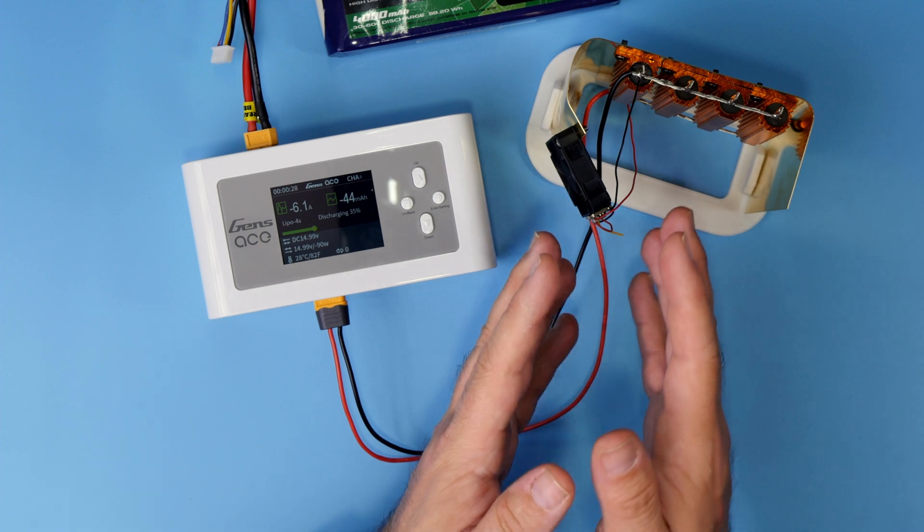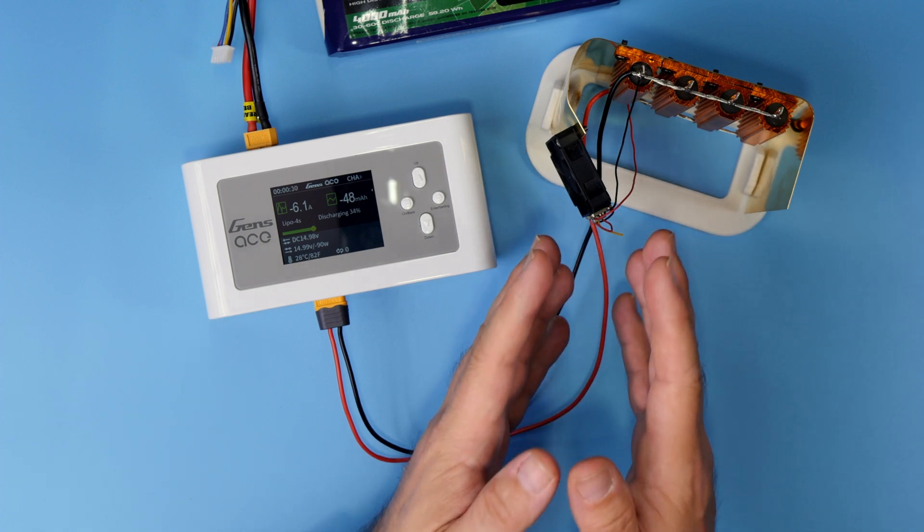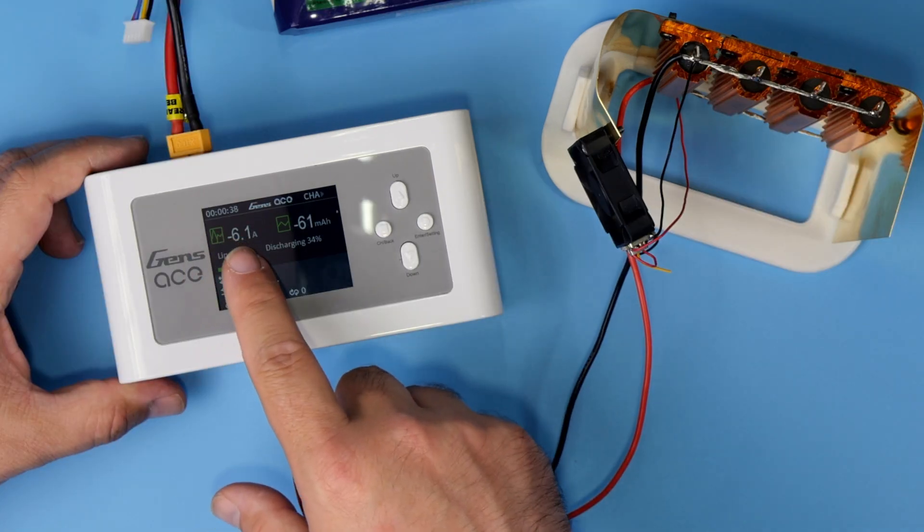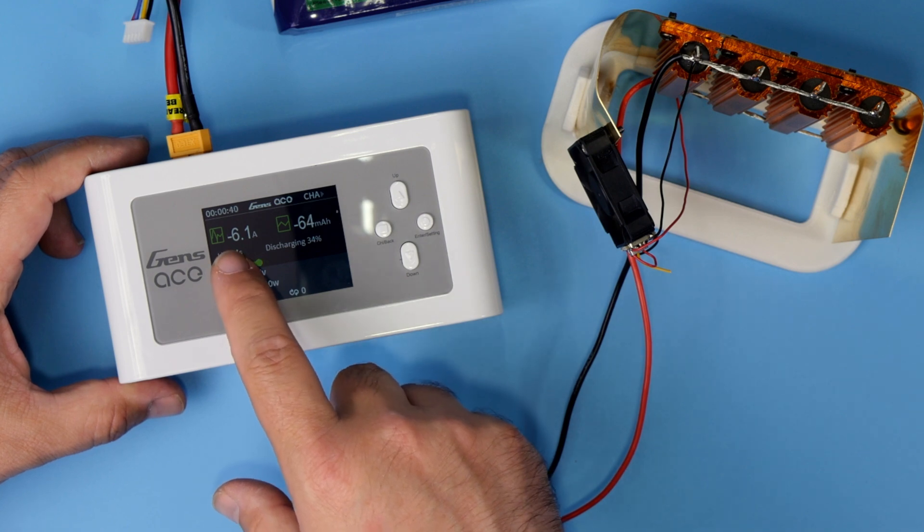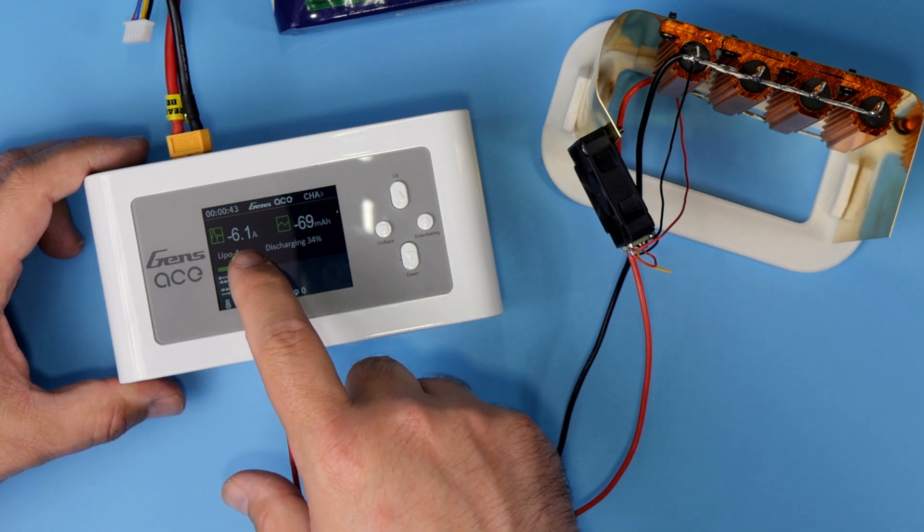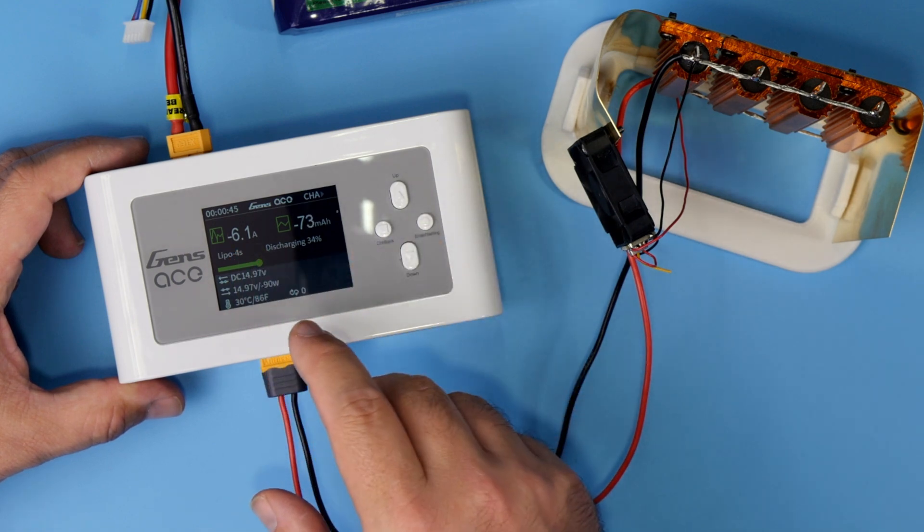Yes, I know the fan is too small, but this is what I had, so this is what I installed. Right now the charger starts to give us some basic information. Right now it's pulling 6.1 amps, more or less what we demanded.